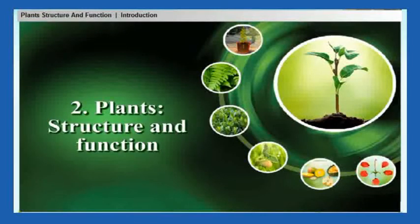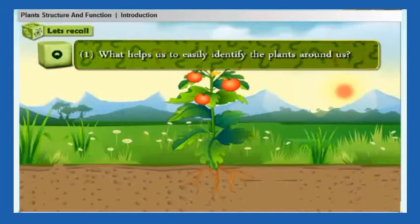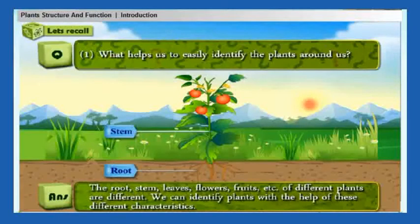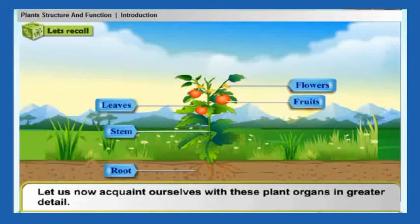The two plants: structure and function. Let's recall what helps us to easily identify the plants around us. The root, stem, leaves, flowers, fruits, etc. of different plants are different. We can identify plants with the help of these different characteristics. Let us now acquaint ourselves with these plant organs in greater detail.